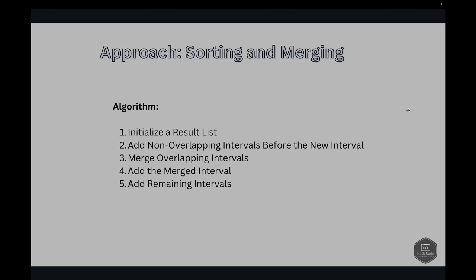The approach is a sorting and merging approach. First, we start with an empty list called 'merged' to store the final list of intervals after insertion and possible merging. Then we traverse the list of intervals and add intervals to 'merged' that end before the new interval starts — that is, we check if the end time of the current interval is less than the new interval's start time, and if so, add it to the result.